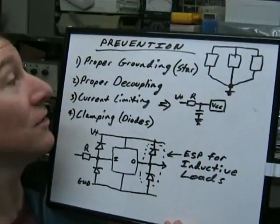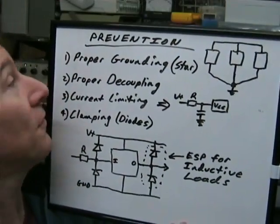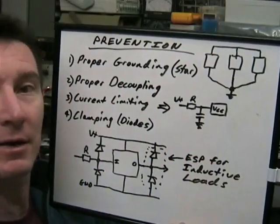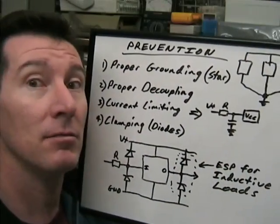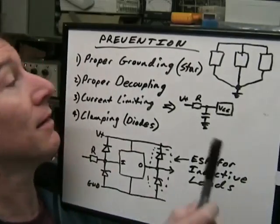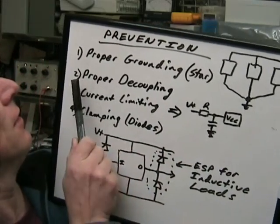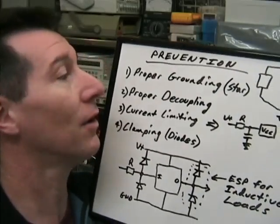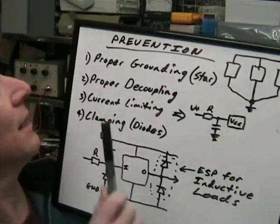So how do you prevent SCR latch up? I'm glad you asked. I've got a list of things you can do to help prevent it. First one, proper grounding. Make sure you have used proper star grounding techniques and just proper grounding. But that's probably a whole log in itself. Proper decoupling. Make sure you decouple your chips properly. Otherwise that can cause SCR latch up issues too.